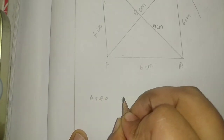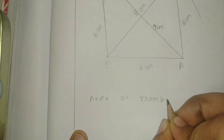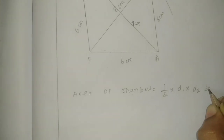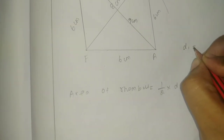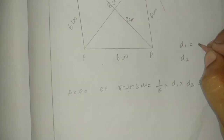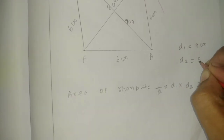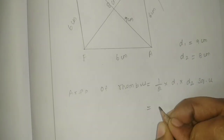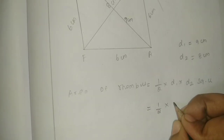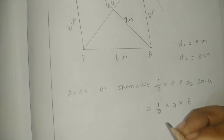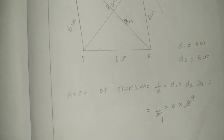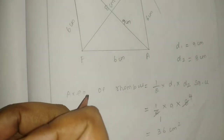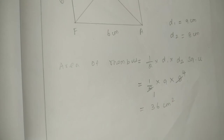Area of rhombus — what is the formula? One-half into D1 into D2 square units. D1 is 9 cm and D2 is 8 cm. Area = half into D1 into D2 = half into 9 into 8. Two tables: half of 8 is 4. So 9 fours are 36 cm square.